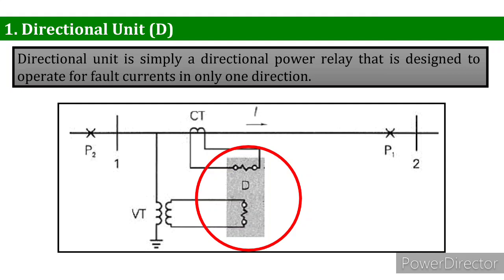Therefore, the overcurrent element cannot start to operate until its secondary circuit is completed. In other words, the directional element must operate first — that is, contacts one and two must close — in order to operate the overcurrent element.